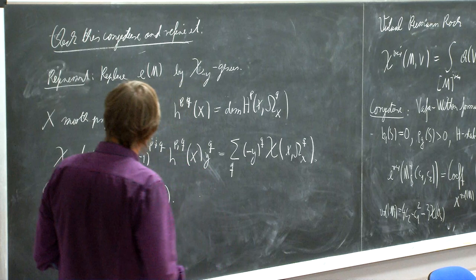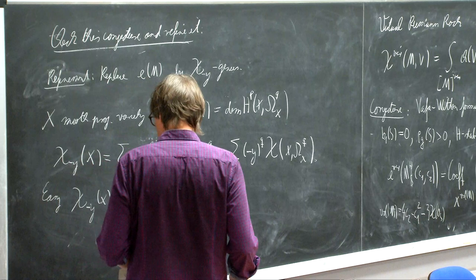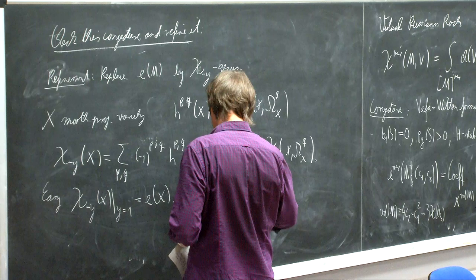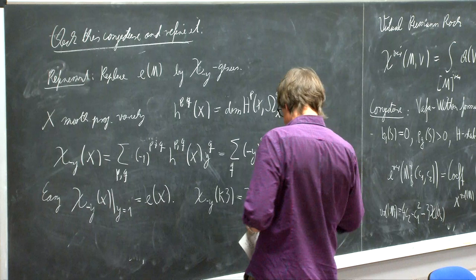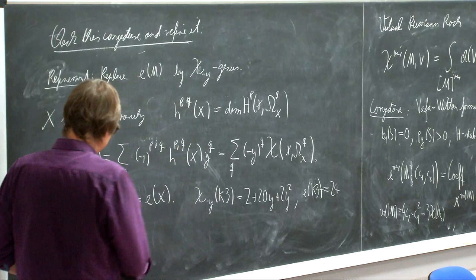This virtual version is done by putting the letters at the correct places. Just as an example, if I take the chi-y genus of a K3 surface, then this is 2 plus 20y plus 2y squared. The Euler number, as everybody knows, is 24, which fits this formula with y equal to 1.